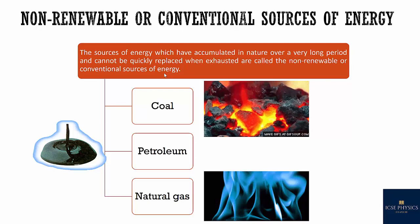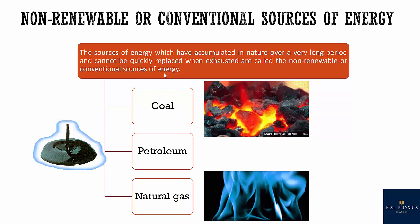Let's see what the non-renewable or conventional sources of energy are. The sources of energy which have accumulated in nature over a very long period and cannot be quickly or easily replaced when exhausted are called non-renewable or conventional sources of energy. The first is coal. Coal is found in deep mines under the surface of the earth. Coal is a non-renewable source of energy made of complex compounds of carbon, hydrogen, and oxygen, along with some free carbon and compounds of nitrogen and sulfur. It is the most common source of energy in our country.